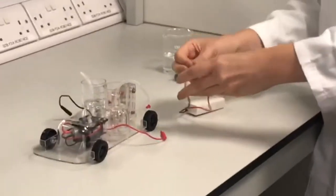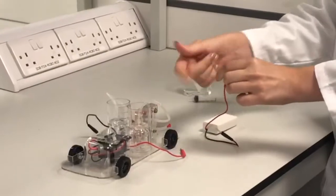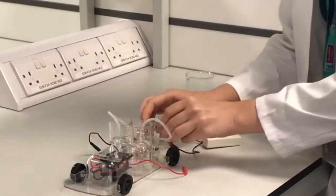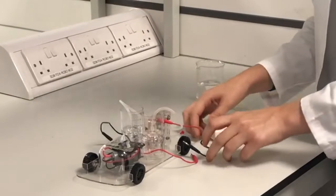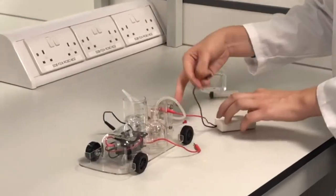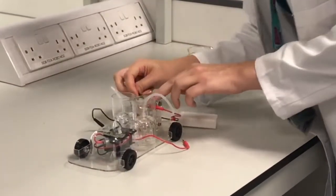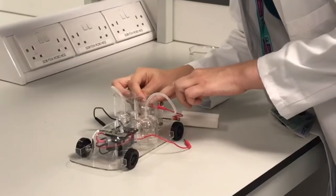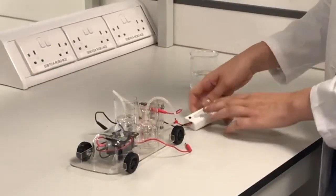Now we need our power source. This could be solar power or whatever. To the positive end, I'm going to attach it to the side that will produce the oxygen. And the negative, I'm going to attach to the other side where the hydrogen will be produced. There we go.